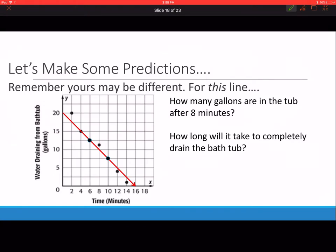Now we have to make some predictions. How many gallons are in the tub after 8 minutes? 8 minutes is our x. Our equation was y equals negative 5 fourths x plus 20. After 8 minutes, because minutes is x, we're going to replace the 8 for the x.